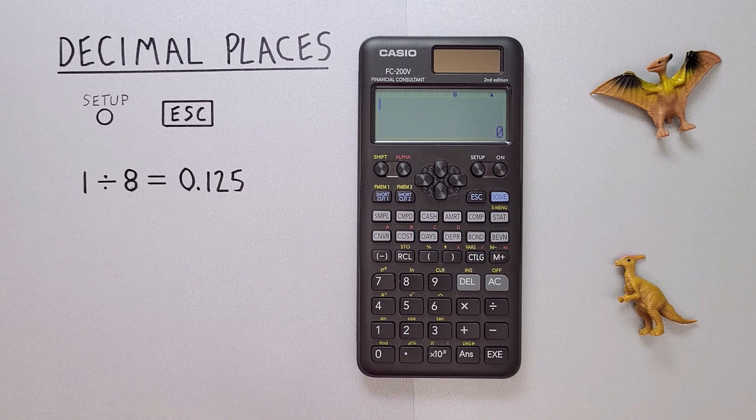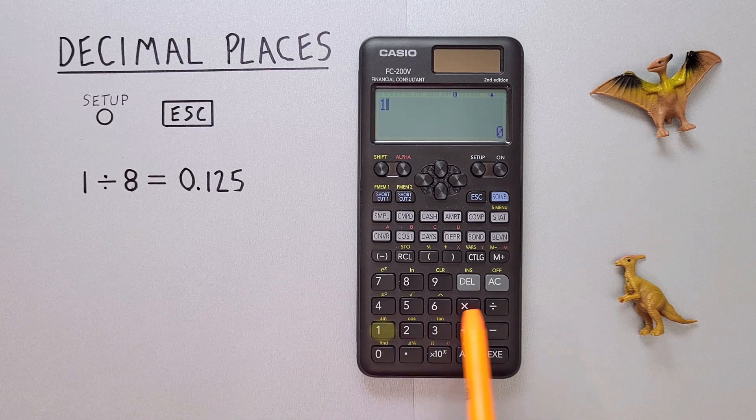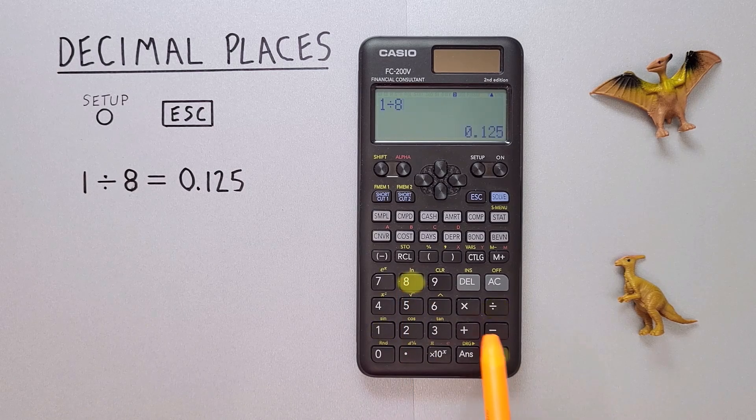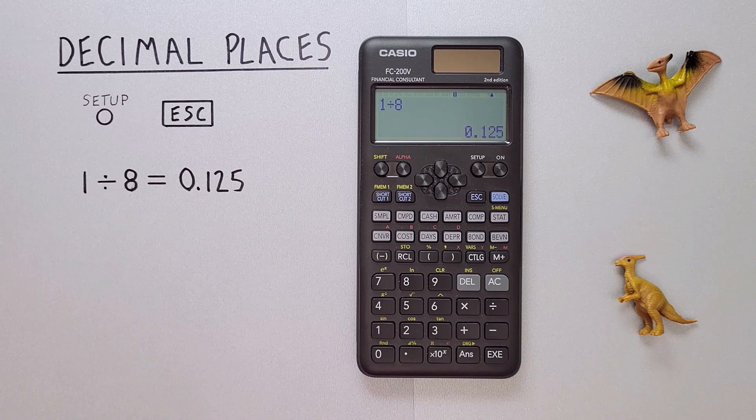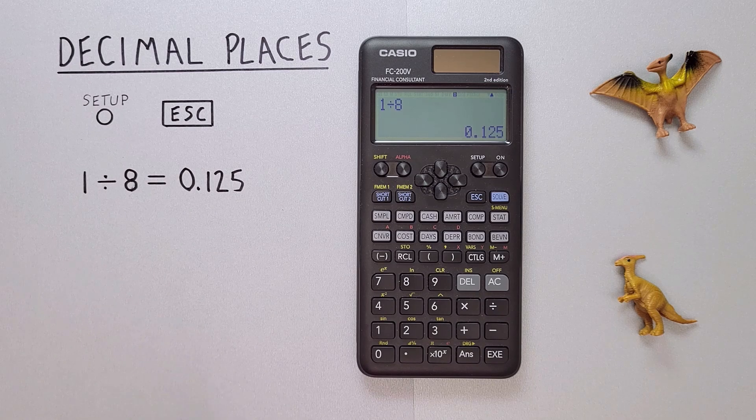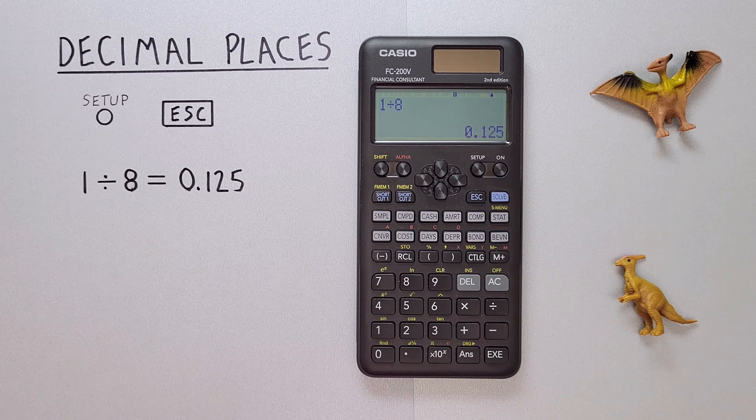Normally when we're using this calculator to do something like 1 divided by 8, it gives us all of our decimals. But since this is a financial calculator, what if we wanted to round our results and get say two decimals?